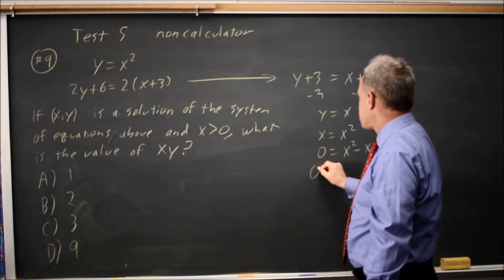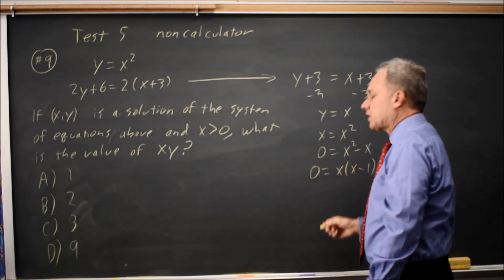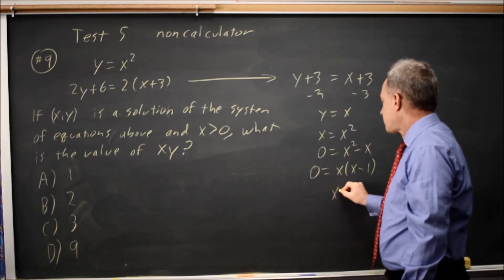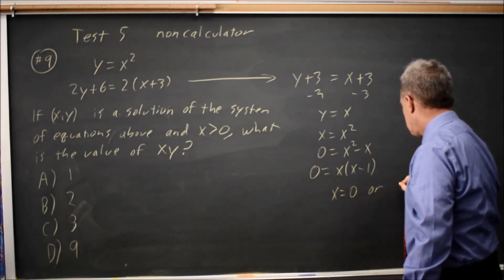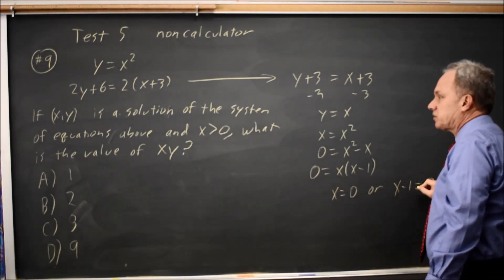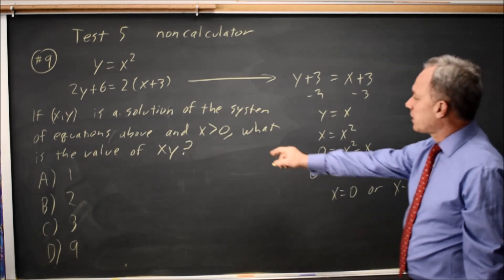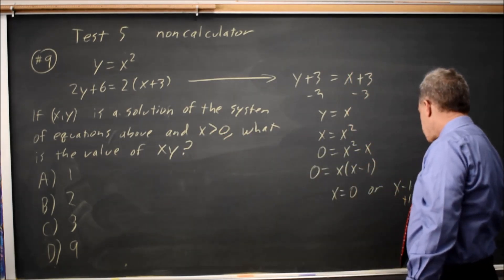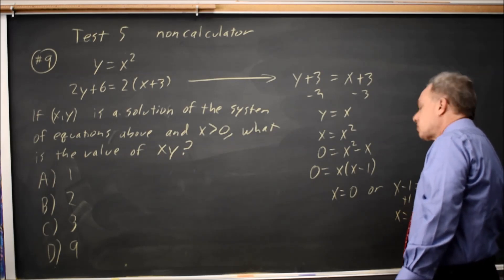Factor out an x. And if a product equals 0, either the first factor equals 0, or the second factor equals 0. Since we're told x is greater than 0, add 1 to both sides, and x equals 1.